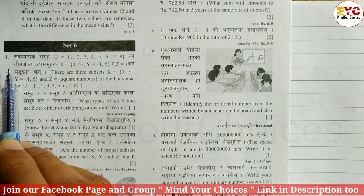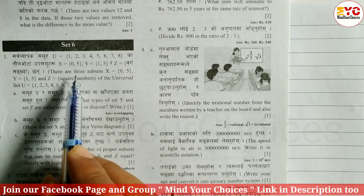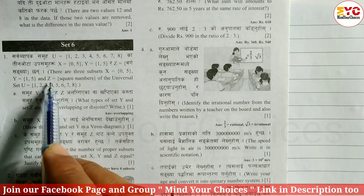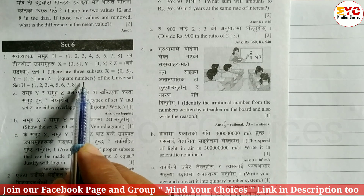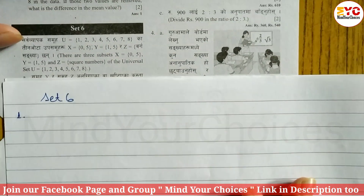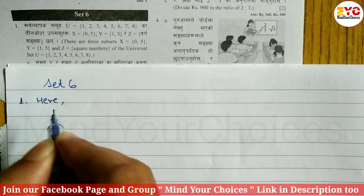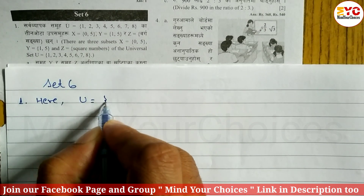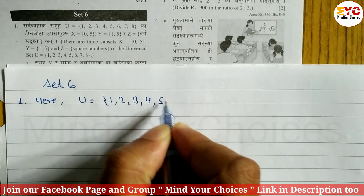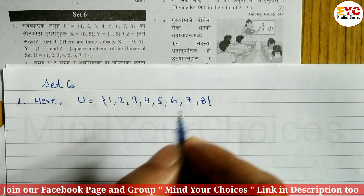Question number 1. There are three subsets: X is equal to 05, Y is equal to 1Z, and Z is equal to K1. Square number of a universal set U. Here U is equal to 1, 2, 3, 4, 5, 6, 7, 8. Universal set.